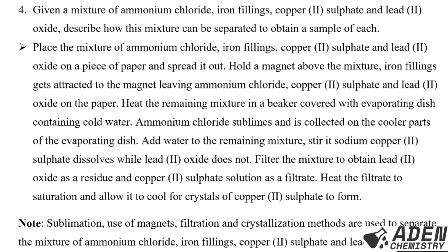First, use a magnet to remove iron filings. Next, use sublimation method to remove ammonium chloride. Place the mixture on a piece of paper and spread it out, hold a magnet above the mixture — iron filings get attracted to the magnet, leaving ammonium chloride, copper(II) sulfate, and lead(II) oxide on the paper.